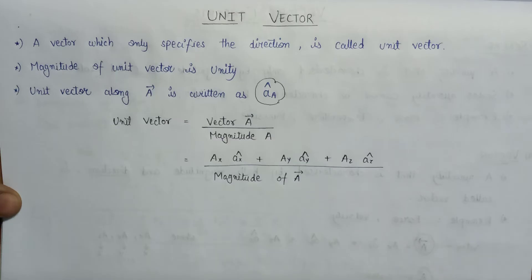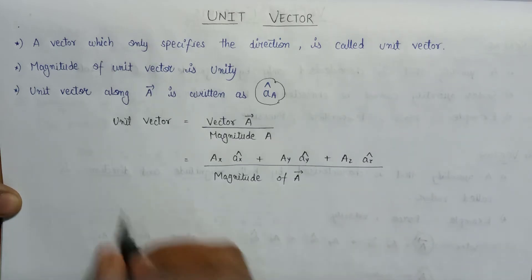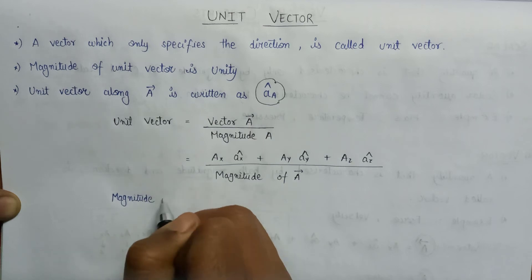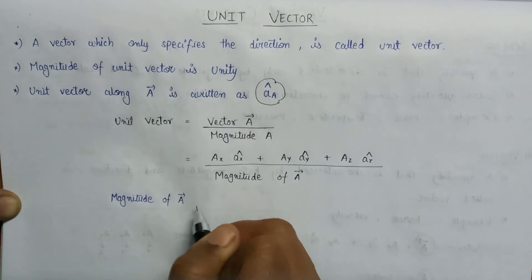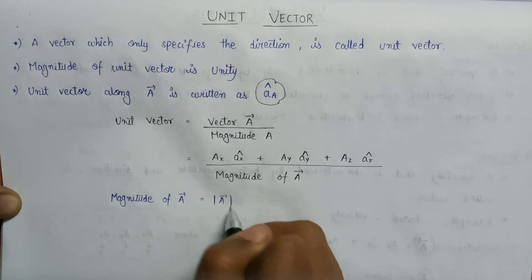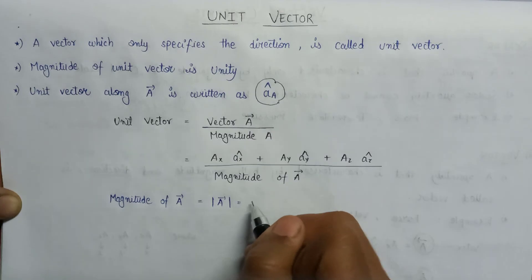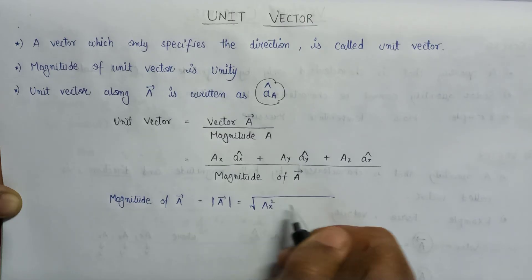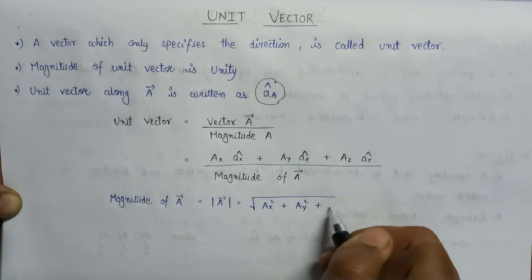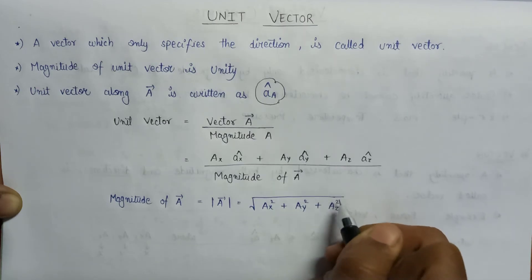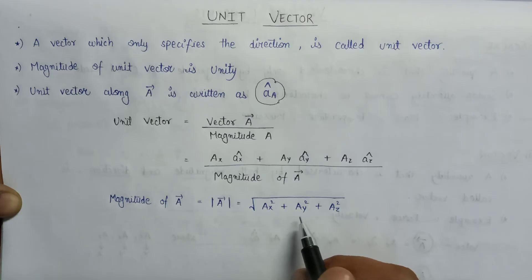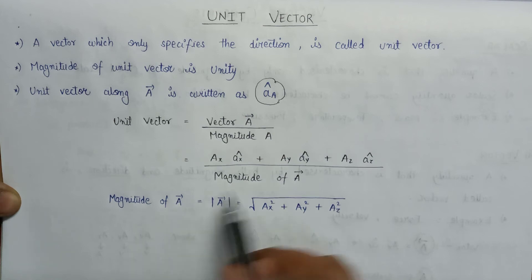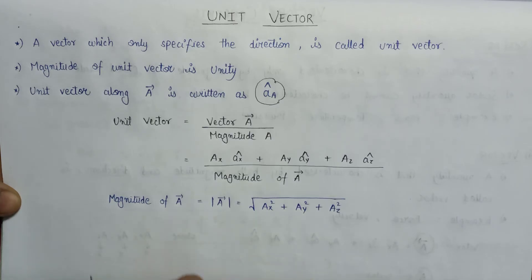Now let us look at the magnitude of a vector. The magnitude of A vector is represented as mod of A, and the formula for evaluating mod of A is equal to the square root of ax² + ay² + az². This is the basic formula for the evaluation of magnitude. If we substitute this value of magnitude into the expression, we get the unit vector.